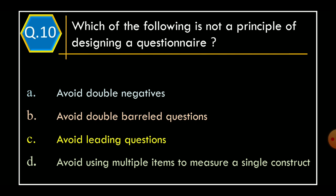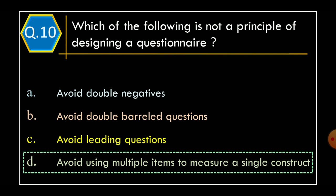Question 10. Which of the following is not a principle of designing a questionnaire? Option A, Avoid double negatives. Option B, Avoid double barreled questions. Option C, Avoid leading questions. Option D, Avoid using multiple items to measure a single construct. And correct option is Option D, Avoid using multiple items to measure a single construct.